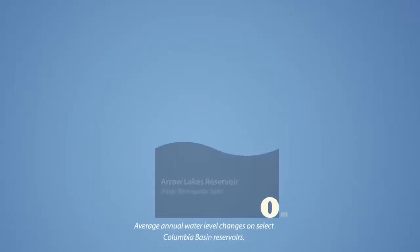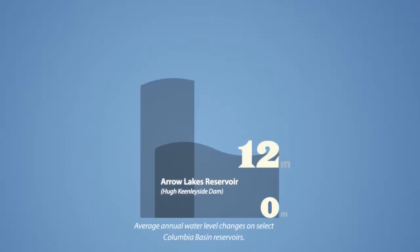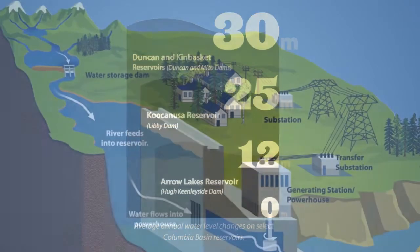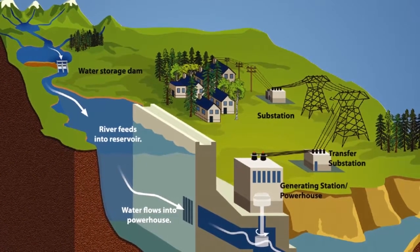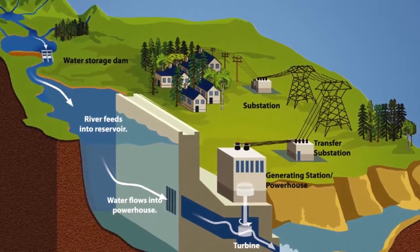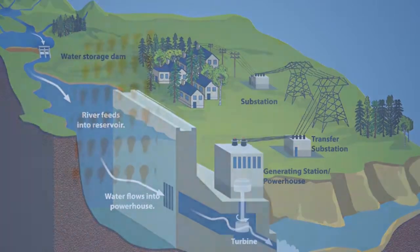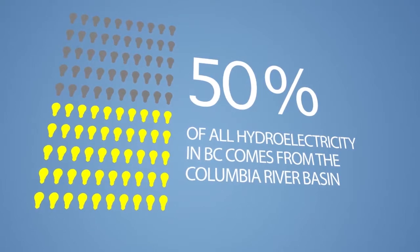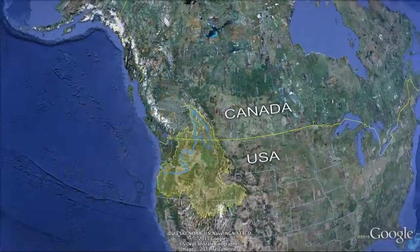Releasing and storing water to meet different needs at different times of the year means water levels fluctuate. In some cases, water levels can change by up to 30 meters per year. Depending on where you live, local water levels may change during the day. As the water flows downstream, it generates hydroelectricity each time it passes through a generating station at a dam. Almost half of all hydroelectricity in BC comes from the Canadian Columbia Basin.